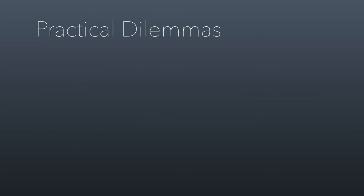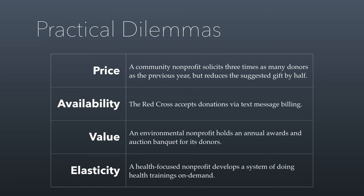Let's give some examples. In terms of price, a community nonprofit might solicit three times as many donors as the previous year but reduce the suggested gift by half. This is a way to change the price — you get more donors and maybe a more efficient outcome.